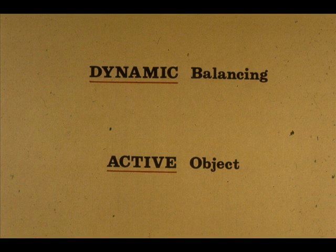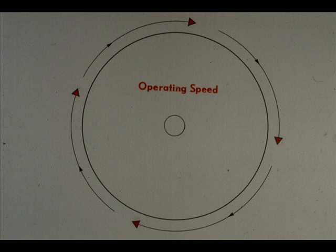Now that you know what is meant by static balancing, let's turn to the subject of this training module: dynamic balancing. As we mentioned a few moments ago, dynamic unbalance is unbalance in an active or rotating object. Let's use the same flywheel for dynamic balancing that we used for static balancing. We will assume that the flywheel is mounted in the same carrier, but it is now coupled to a driver that is turning the wheel at its normal operating speed. This means that the wheel is active or dynamic.